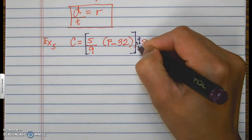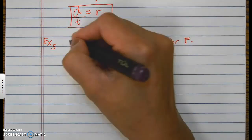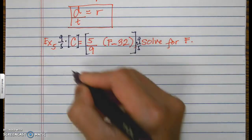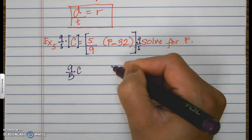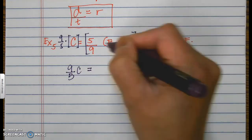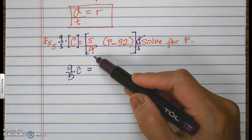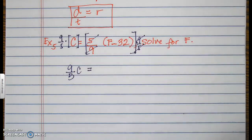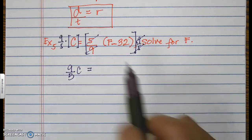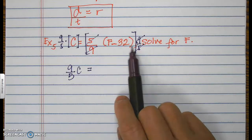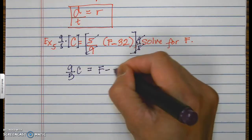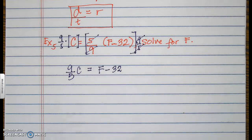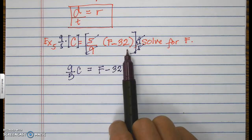Whatever I do on the right, I must do on the left — multiply both sides by 9 over 5. The 9s cancel and the 5s cancel, turning that fraction to 1. There is just 1 in front of the parentheses, making the right side become f minus 32. You are permitted to remove the parentheses whenever the number in front is a positive 1, because 1 times any number is the number itself.